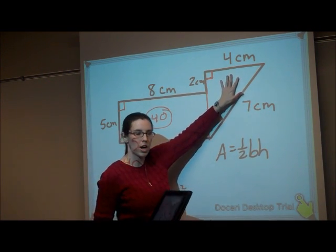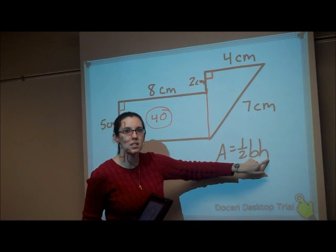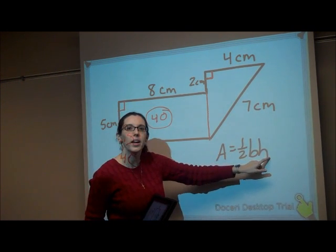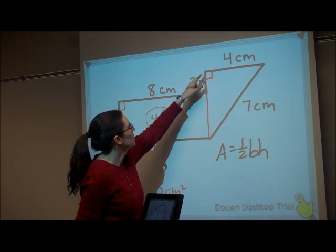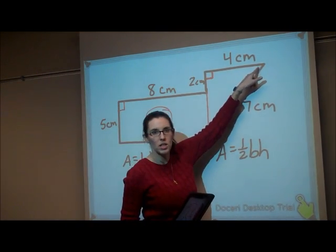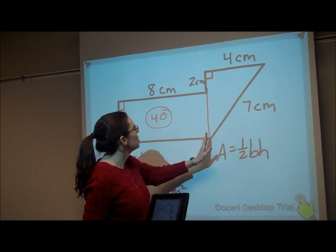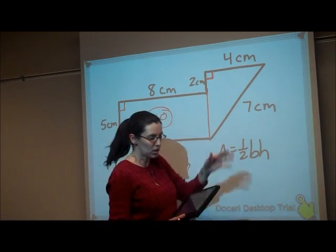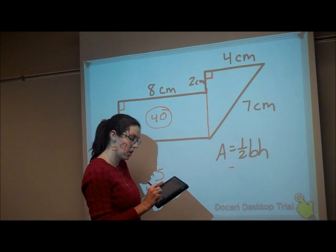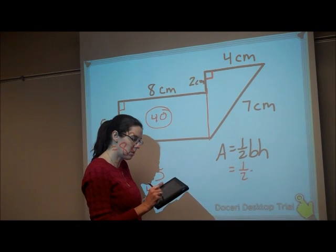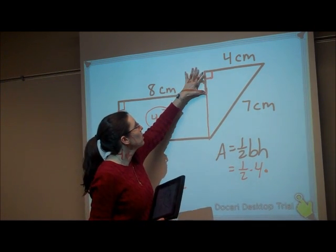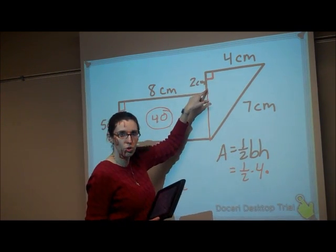So now going to this triangle, I need its base and its height. So I need one of the sides of that triangle and the height that's perpendicular to it. So I want to use these. I can say that the 4 is my base because that's one of the sides of the triangle. So I have one-half times the base of 4 times its height. Well, they only told me that this part was 2.